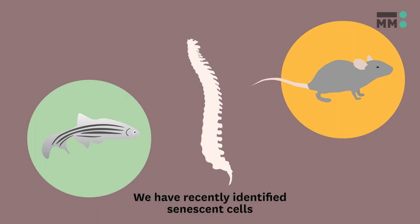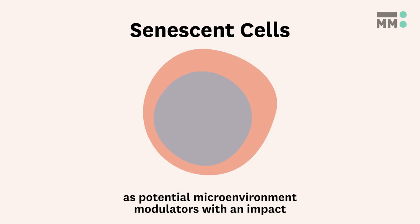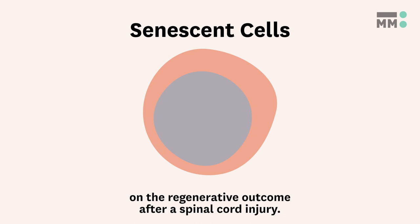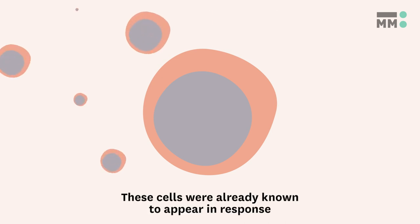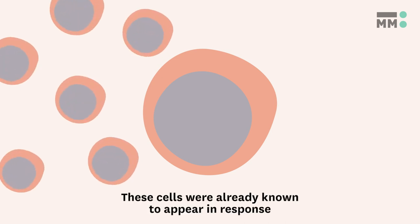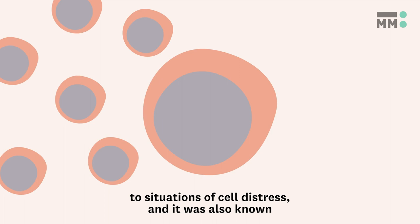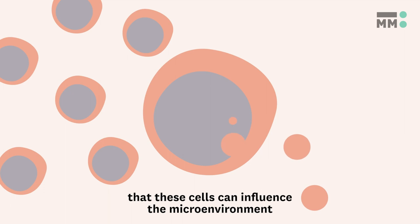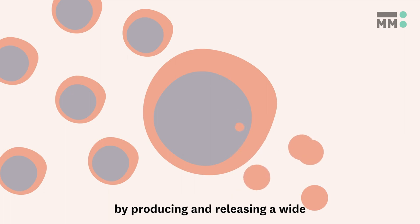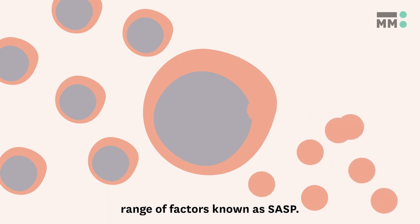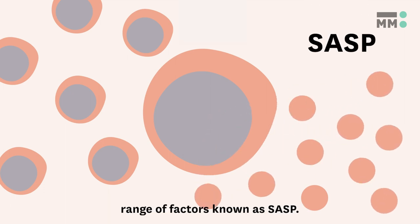We have recently identified senescent cells as potential microenvironment modulators with an impact on the regenerative outcome after a spinal cord injury. These cells were already known to appear in response to situations of cellular stress, and it was also known that these cells can influence the microenvironment by producing and releasing a wide range of factors known as SOS.